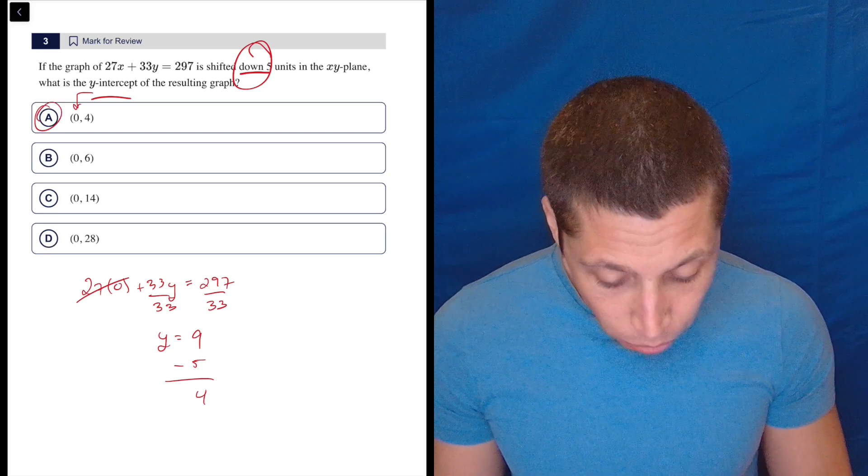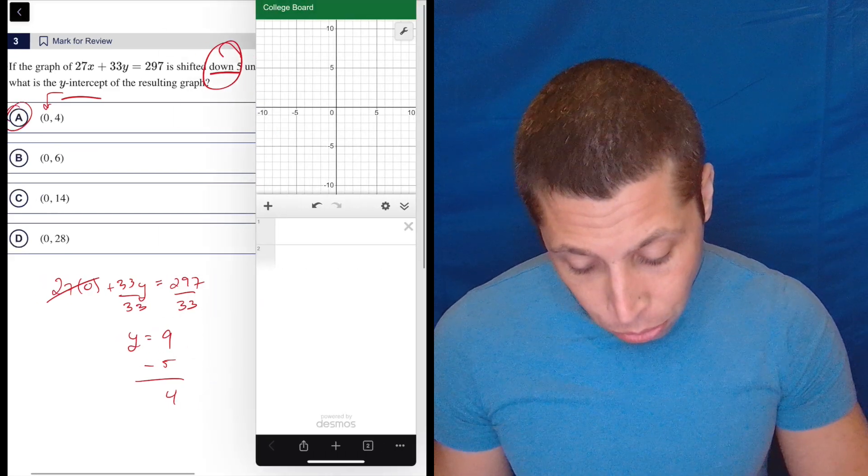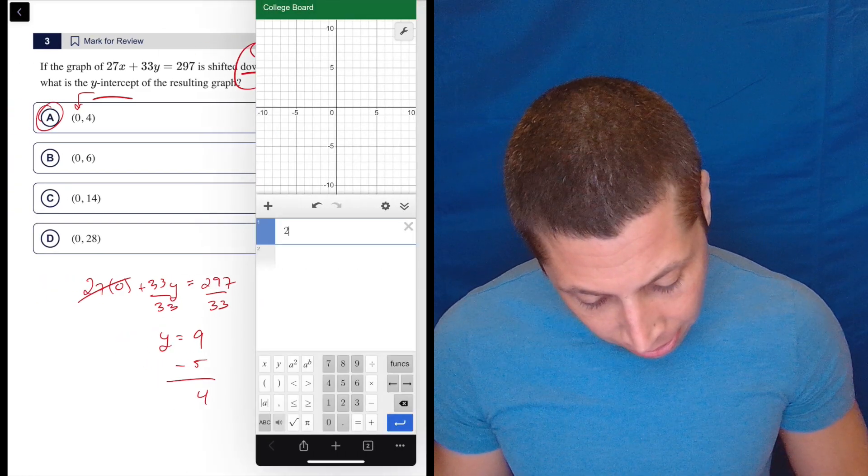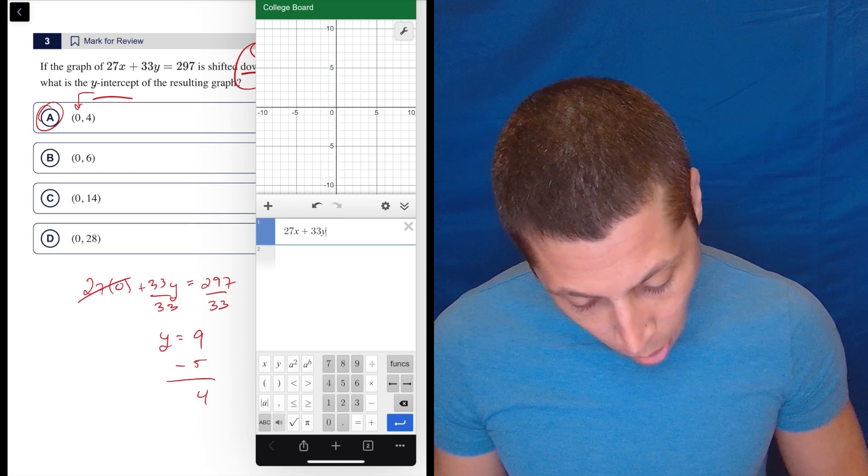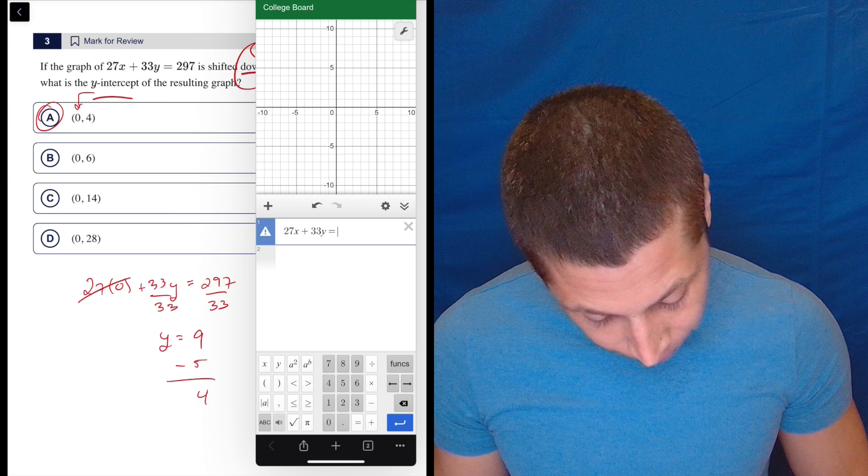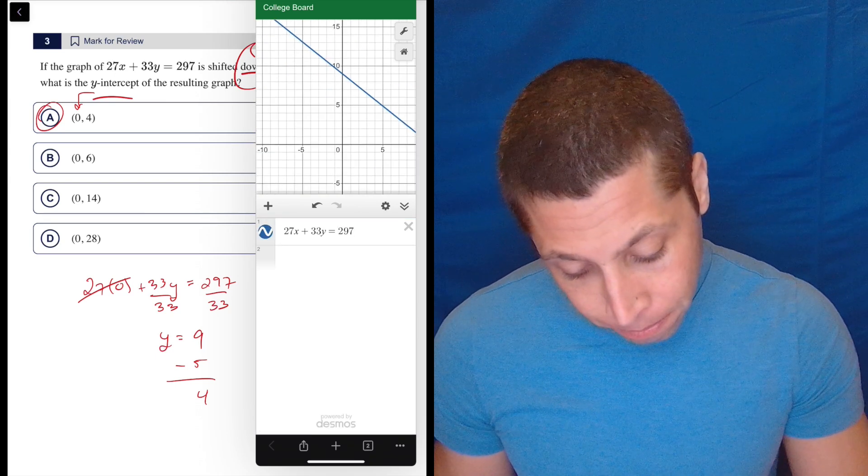We could do this a little bit more visually if we wanted to. I know this isn't written in y equals mx plus b format, so you could type this in. The downside is we're going to get some pretty big numbers here. So 33y equals 297. There it is. There's our y-intercept.